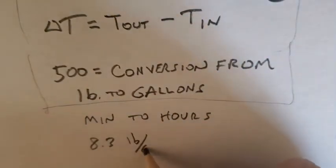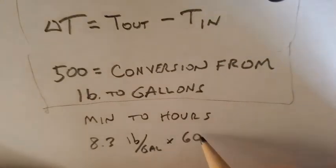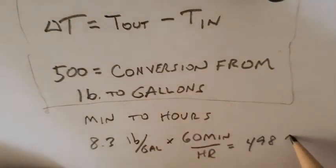A gallon of water weighs about 8.3 pounds. Using 8.3 pounds per gallon times 60 minutes an hour, we come up with 498, which is about 500. And that's why we use 500.